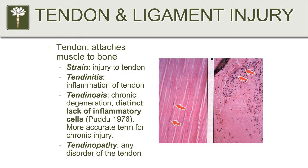A tendon is a structure that attaches muscle to bone. A strain is a stretch injury to a tendon, whereas a sprain is the identical type of stretch injury to a ligament. Everybody hears about tendonitis — by definition, tendonitis means inflammation of the tendon. But if an injury is more than three to four weeks old, it is no longer inflammatory; under a microscope after three to four weeks, there are no signs whatsoever of the classic inflammatory changes. Inflammation is defined by certain types of cells in the area.